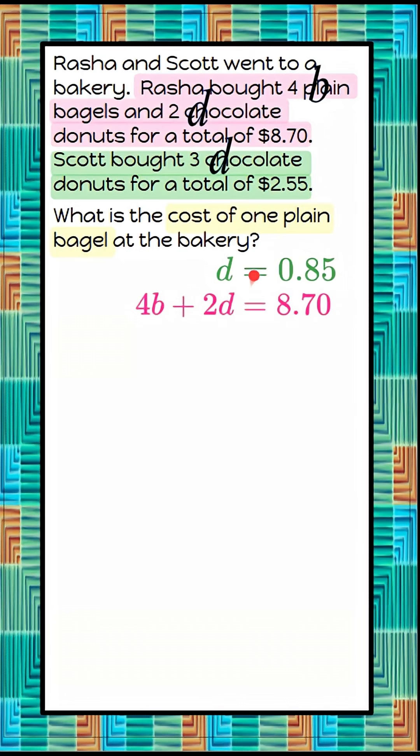So now I'm going to use that information to solve my second equation. I'm going to replace D in this equation with $0.85, because now we know that one donut is $0.85 at this bakery. So let's rewrite that. Two times $0.85, or 2D.